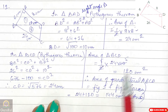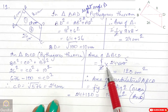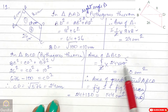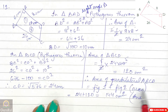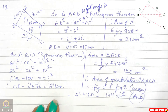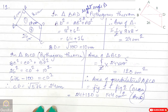Area of figure 2 (triangle BCD) = half × base × height = half × 24 × 10 = 120 cm². Area of quadrilateral ABCD = area of figure 1 + figure 2 = 24 + 120 = 144 cm². This is the answer.